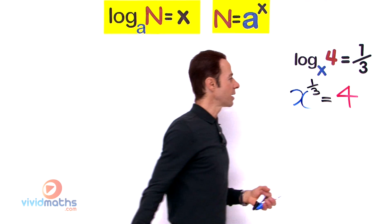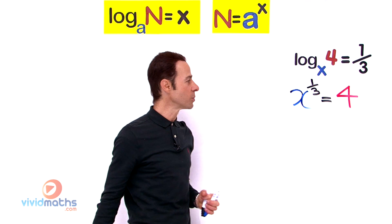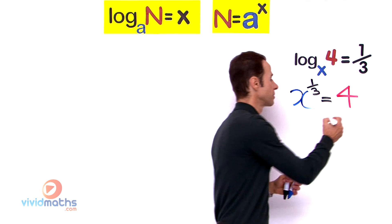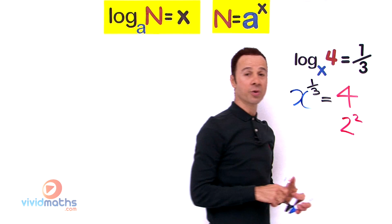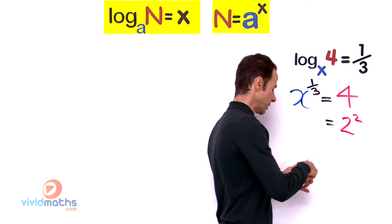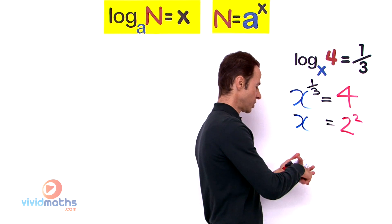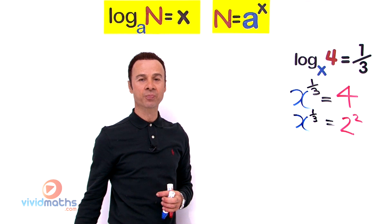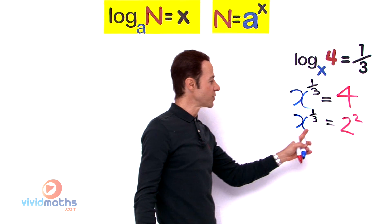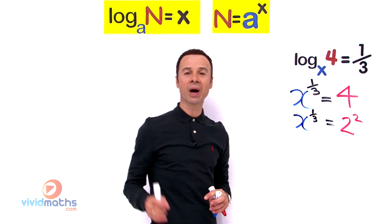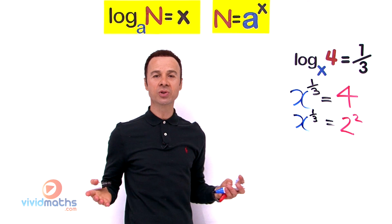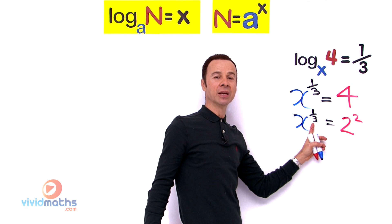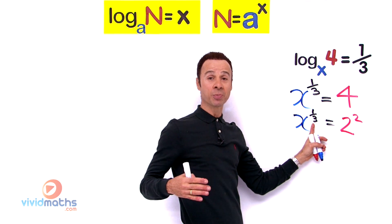We can't match bases directly here, so let's lower the base for 4. Since 4 equals 2 squared, we rewrite: 2 squared equals x to the power of one third. To solve for x, one of the best things we can do is transform that power of one third into a 1. How do we turn it into a 1?